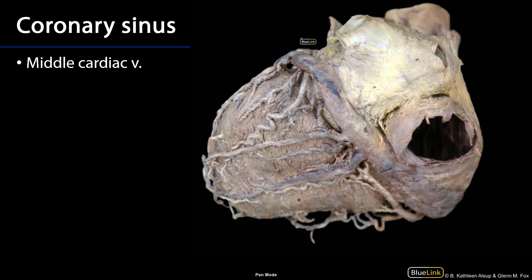Coming around that corner where we left off in the coronary sulcus is the great cardiac vein, and it's emptying into this very large dilated vessel called the coronary sinus. The coronary sinus lives in the coronary sulcus and it is the collecting vein of the greater system before it heads into the right atrium.